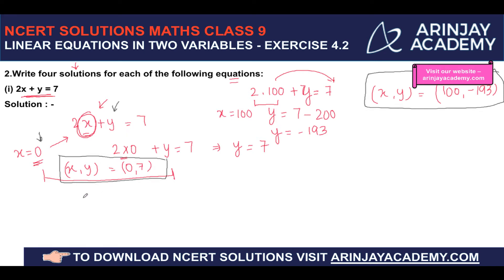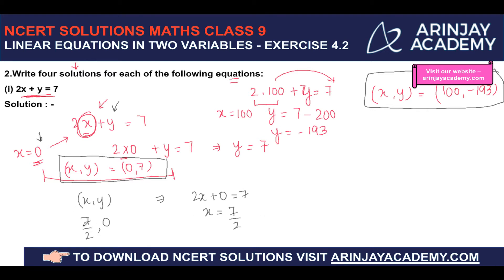For the third solution, let's say y is equal to 0. Substituting into 2x plus 0 equals 7 gives x equal to 7 upon 2. So (7/2, 0) is the third solution of this equation.